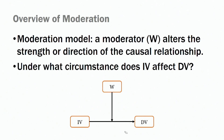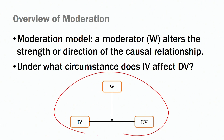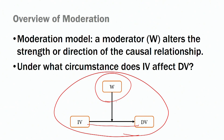This is the graphical representation you usually have when testing for moderators. We have a main effect — the independent variable influencing the dependent variable — but that relationship is a function of a particular moderator. It can change based on the level of the moderator. How do we test for a moderator or moderation models? It's pretty simple. We have a series of steps.